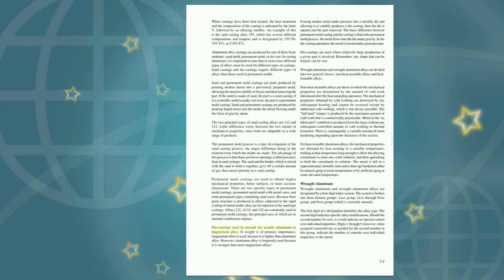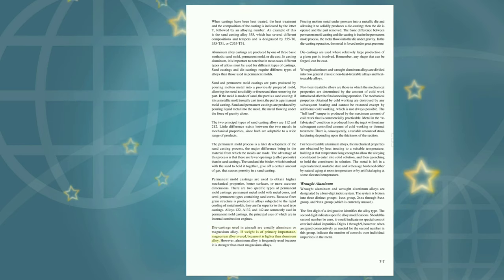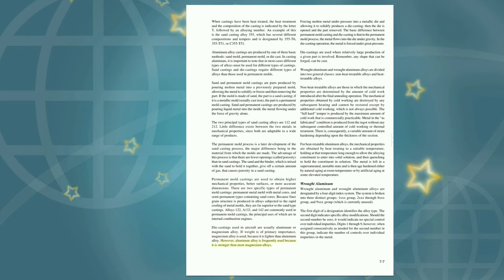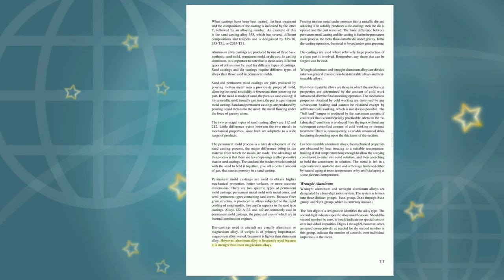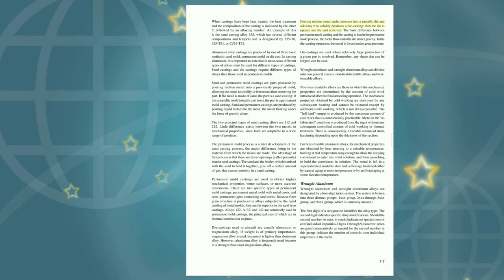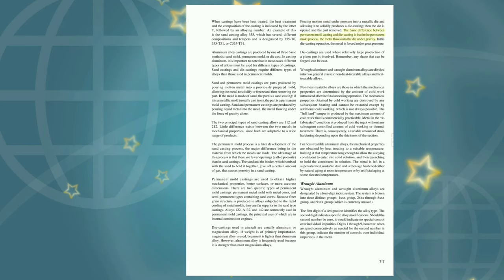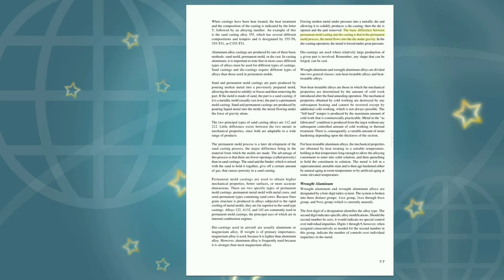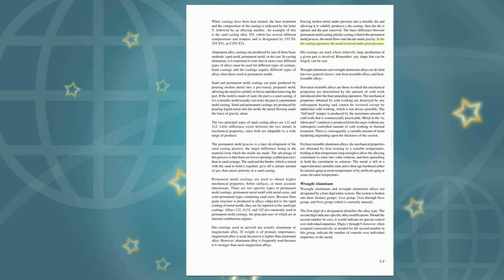Die castings used in aircraft are usually aluminum or magnesium alloy. If weight is of primary importance, magnesium alloy is used because it is lighter than aluminum alloy. However, aluminum alloy is frequently used because it is stronger than most magnesium alloys. Forcing molten metal under pressure into a metallic die and allowing it to solidify produces a die casting. The basic difference between permanent mold casting and die casting is that in the permanent mold process the metal flows under gravity, while in die casting the metal is forced under great pressure. Die castings are used where relatively large production of a given part is involved.